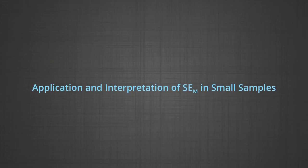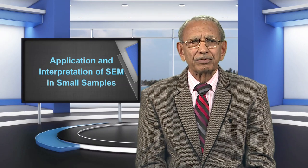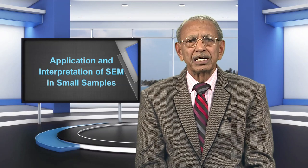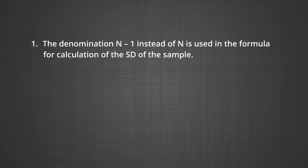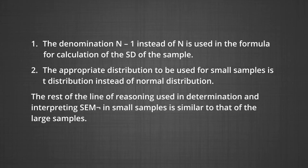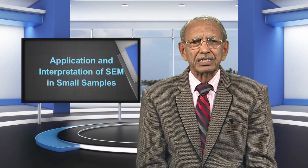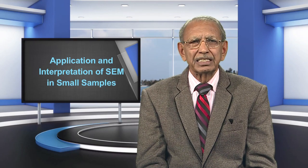Now I am going to explain the application and interpretation of SEM in small samples. The procedure of calculation and interpretation of standard error of mean in small samples differs from that for large samples in two respects. Number one, the denominator n minus 1 instead of n is used in the formula for calculation of SD of the sample. Number two, the appropriate distribution to be used for small samples is the T distribution instead of normal distribution. Here is an example: a randomly selected group of 16 students was administered a test of verbal ability, and the mean and standard deviation obtained were 52 and 8 respectively.